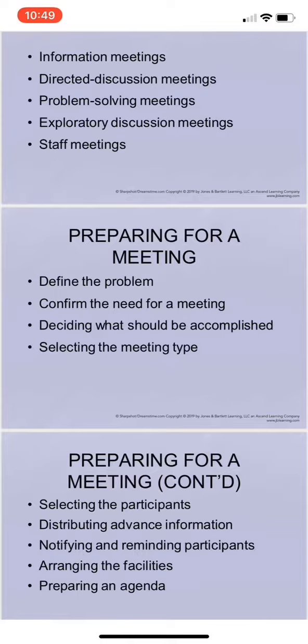Number two, confirm the need for the meeting. A decision of whether or not to involve several people may not be yours alone — confirming your thoughts with a few potential participants can be helpful. Number three, decide what should be accomplished. Before you convene the meeting, you should have a clear idea of what you want to achieve — whether the meeting should give you the solution to a problem, the group's acceptance of an idea, significant decision-making information, or other such results.